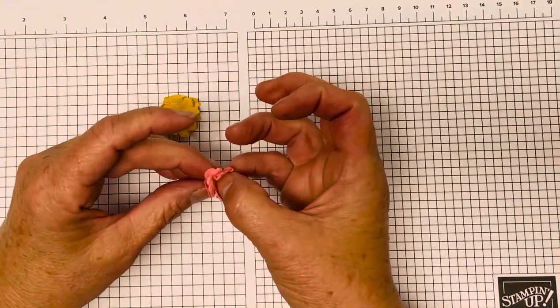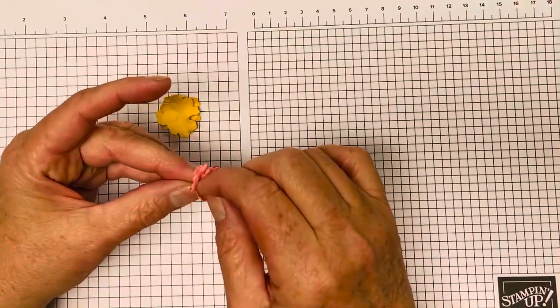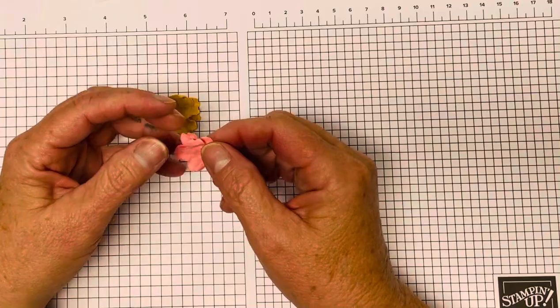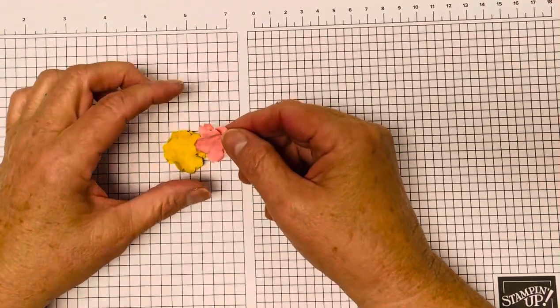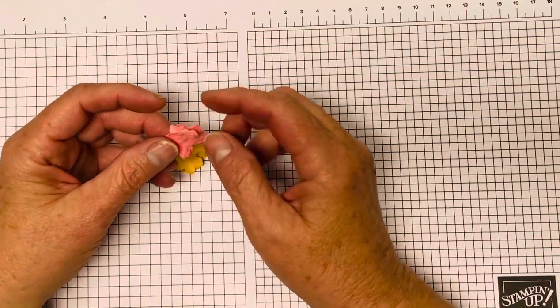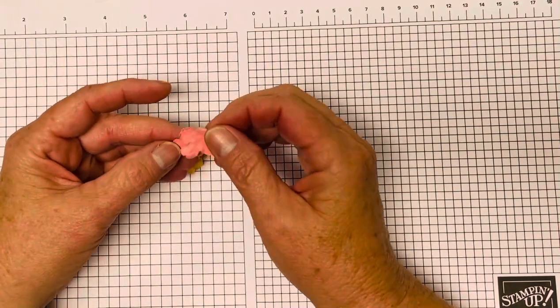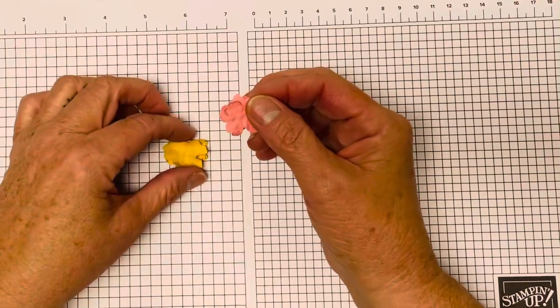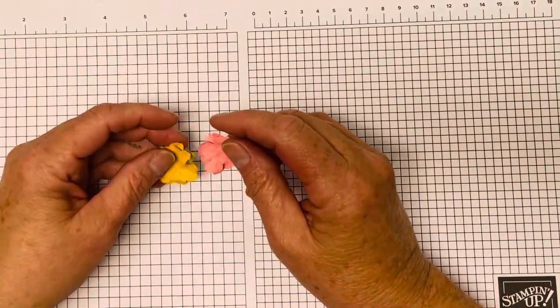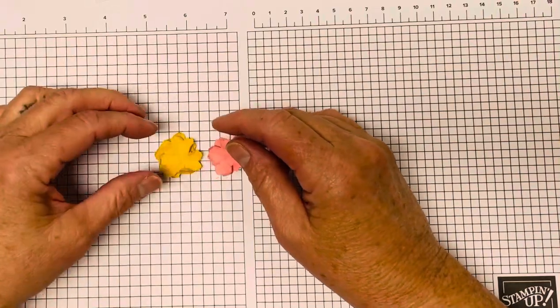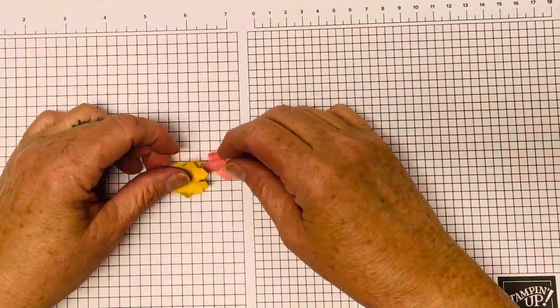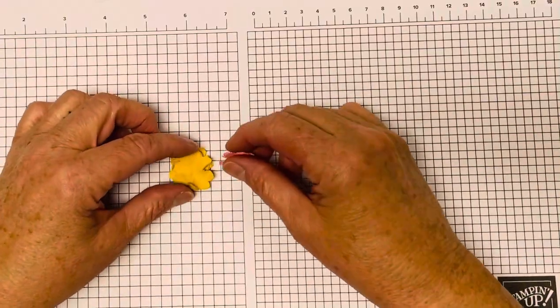So the flower has texture and then put a center in the middle. You could use a button. You can use bling. You can even use another piece of cardstock, like a white or early espresso makes good centers for the flowers as well. So this is just a simple, fun technique that you can do while you're sitting around watching TV or just kind of bored, nothing else to do. If you have that kind of time, I love those nights when I can do that. I use them to color sometimes.